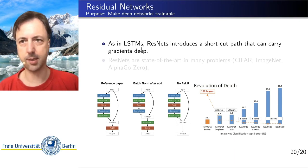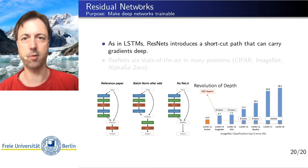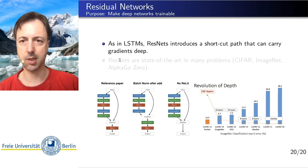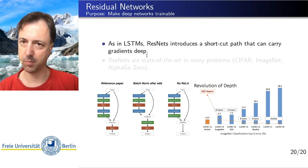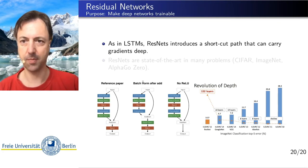ResNets — residual networks — are basically using the same idea for feed-forward neural networks. In some sense, it's a rediscovery of the same principle for feed-forward neural networks.